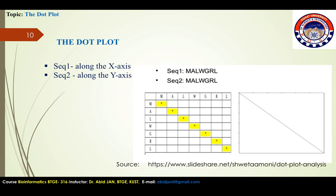Initially the matrix is blank. Starting from the first character in sequence one, which is M, we move across the page keeping in the first row and placing a dot in any column where the character in sequence two is the same — for example, M versus M. Otherwise it is not the same. The process is continued until all possible comparisons between sequence one and sequence two are made.